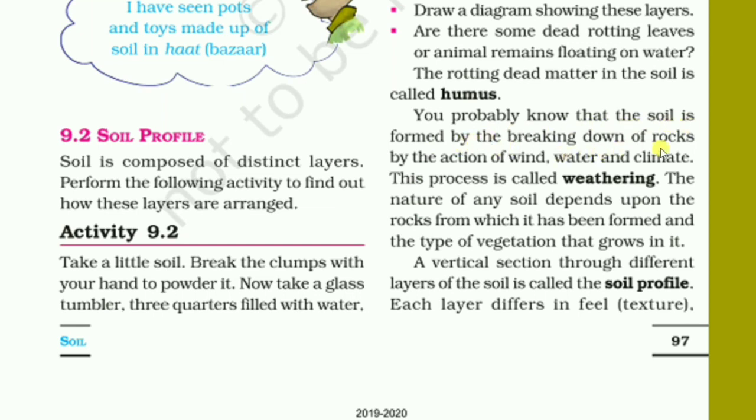You probably know that soil is formed by the breaking down of rocks by the actions of wind, water, and climate. This process is called weathering. The nature of any soil depends upon the rocks from which it has been formed and type of vegetation that grows in it. We generally see different types of soils: black soil, red soil, laterite soil. These are derived from different types of rocks.